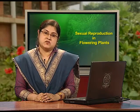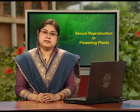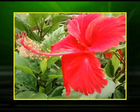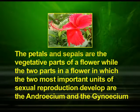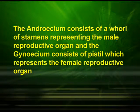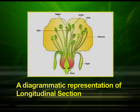Biologically flowers are morphological and embryological marvels and the sites of sexual reproduction. The petals and sepals are the vegetative parts of a flower, while the two most important units of sexual reproduction are the androecium and the gynoecium. The androecium consists of a whorl of stamens constituting the male reproductive organ and the gynoecium consists of pistil which represents the female reproductive organ. In this diagram you can see the longitudinal section of a flower.